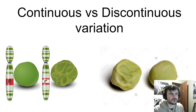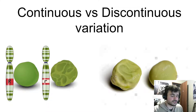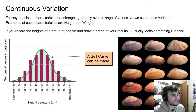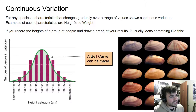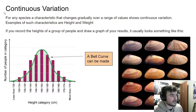Hey everyone, welcome to a quick video explaining the difference between continuous and discontinuous variation. Continuous variation is for any species or characteristic that changes gradually over a range of values. For example, height and weight have continuous variation.